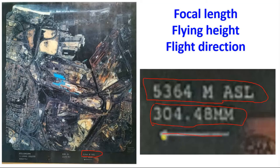Flight direction means the direction in which the aircraft moved. By using the flight direction, you can identify which photographs are from the right side and which are from the left side. These are some of the marginal information of aerial photographs. In some aerial photographs, more information is given; in others, less. This information is useful for the interpretation of aerial photographs. Thank you very much.